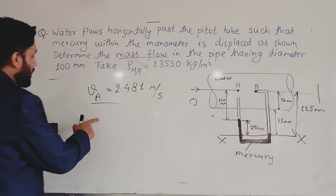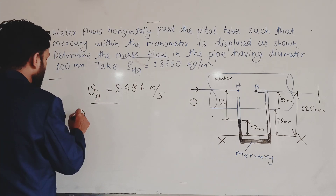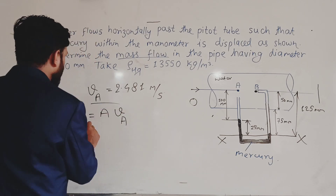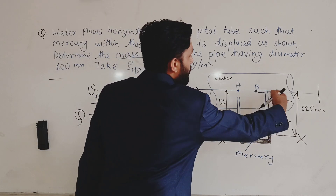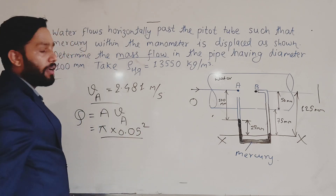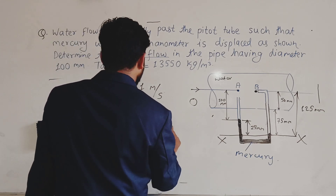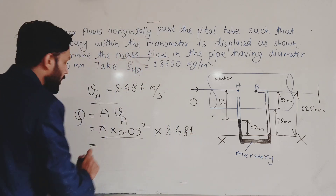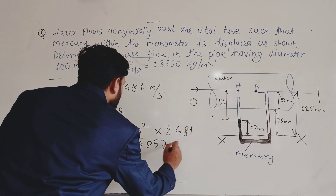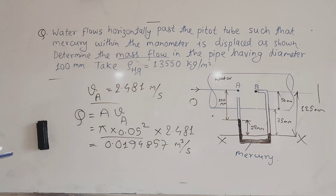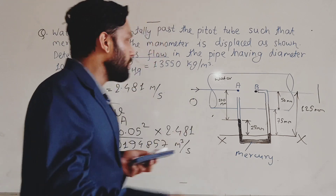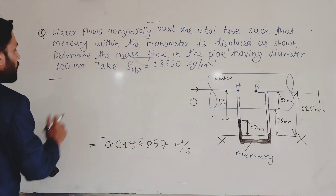The question asks for mass flow rate. First, let us find the discharge Q = Area × velocity. The pipeline diameter is 100 mm so radius = 50 mm = 0.05 m. Area = π × (0.05)² = π r². Discharge Q = π × (0.05)² × 2.481 = 0.01949 m³/s.